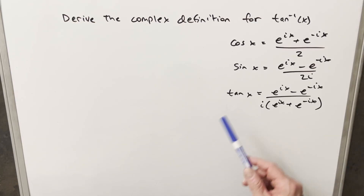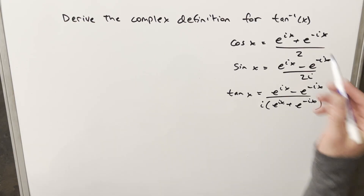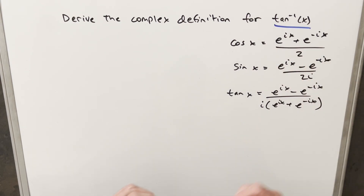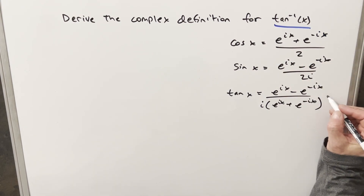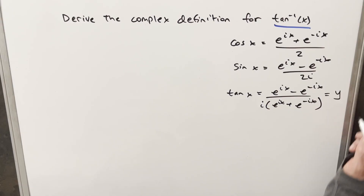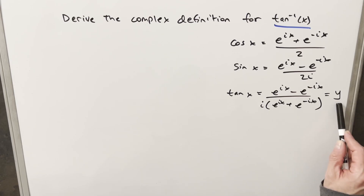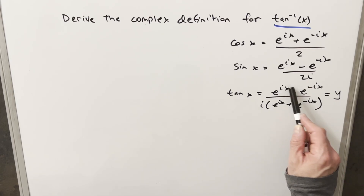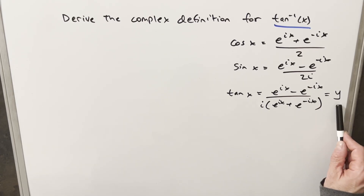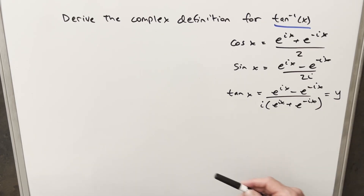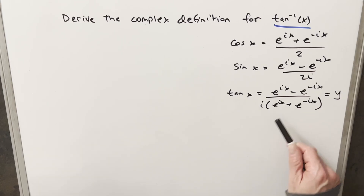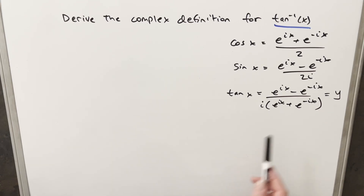Now we're making progress because we've got our tangent, but our goal is to get arctan. What I can do with our definition for tangent is set this equal to y, and then to get an inverse, we reverse the variables — wherever we see an x, I make it a y and bring an x out here — and then by solving for y, that's going to give us our inverse. Let me just rewrite this piece with the variables swapped.